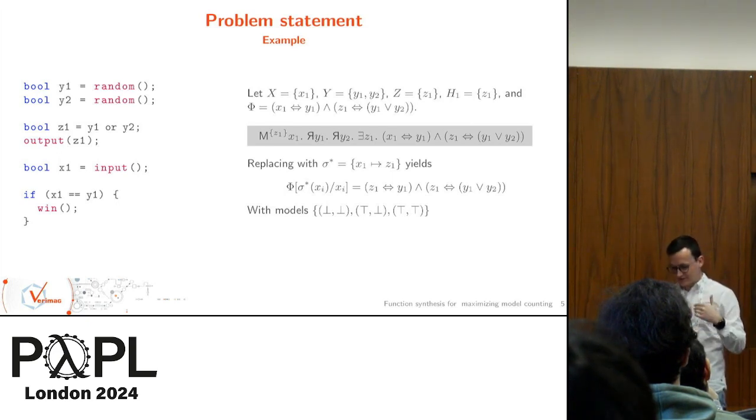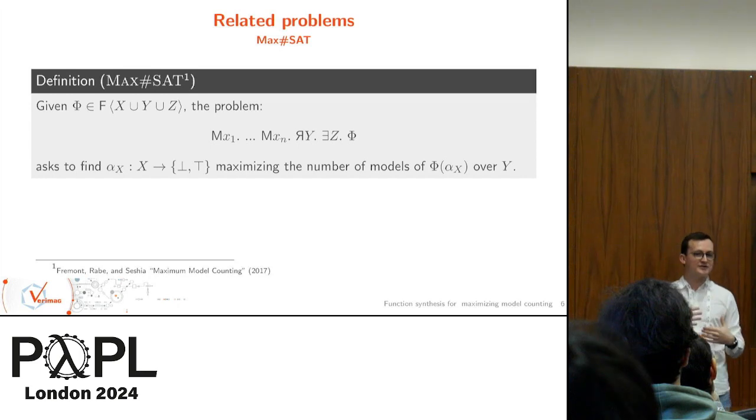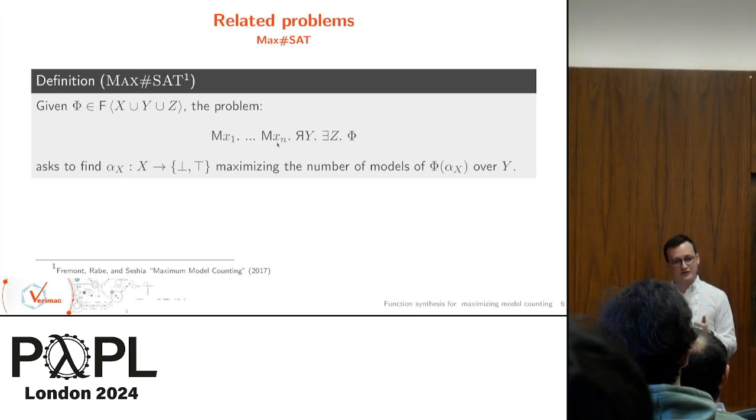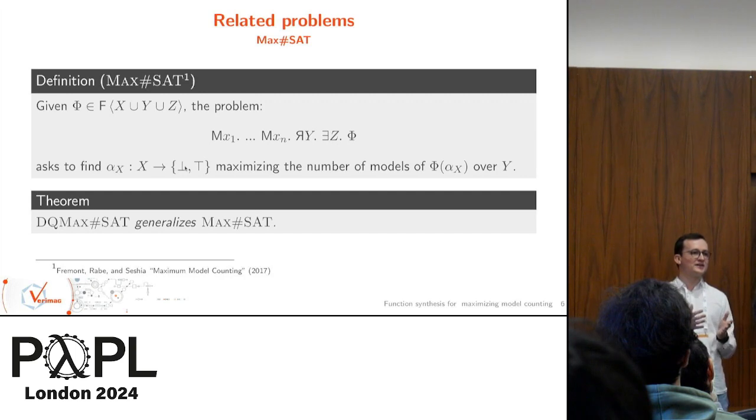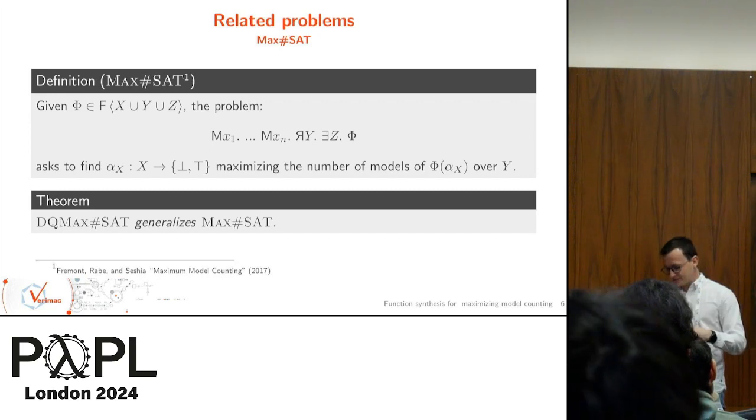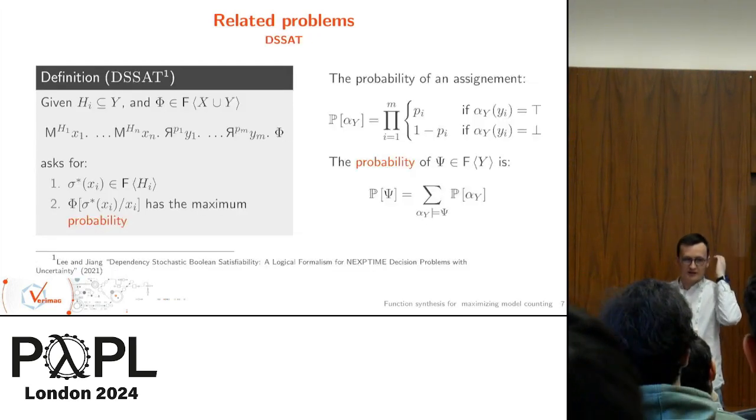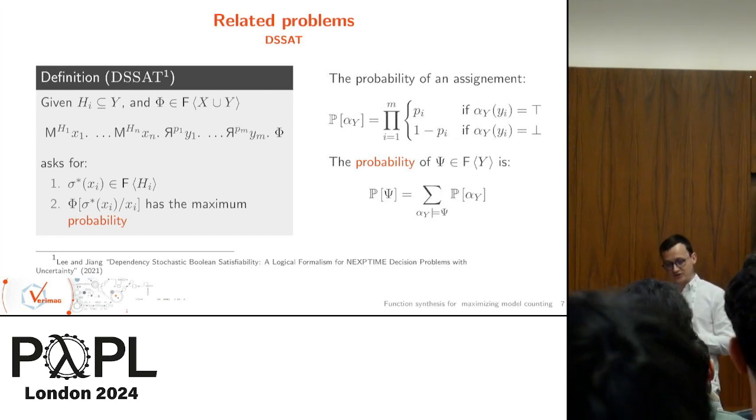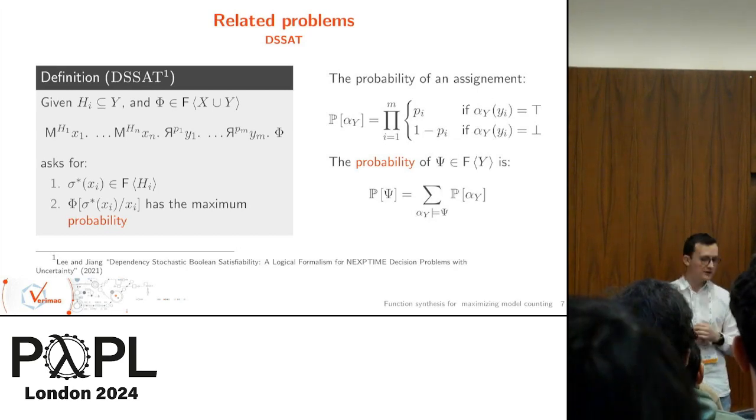Now let's dive into related problems. The first one is a direct reduction of our problem, called maximum model counting. It was introduced in 2017. Basically, instead of asking for a substitution, we ask for an assignment. We have our max variables, counting and existential variables, and we ask for a substitution. We can trivially see that our original problem, called DQmaxSharpSat, generalizes this one just if we take empty sets as dependency sets.